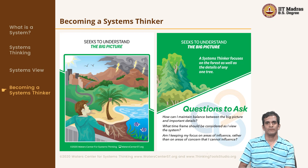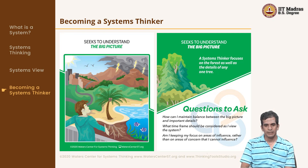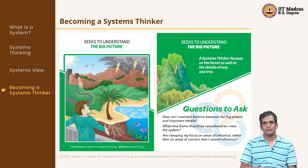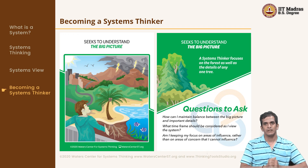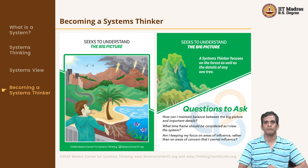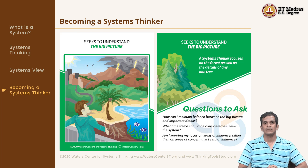The first two habits we are going to look at are seeking to understand the big picture. A systems thinker focuses on the big picture and not just only on the details. He or she needs to be good at both and not just get caught in the details. The question to ask is: how do you maintain the balance between the details and the overall objective or picture?